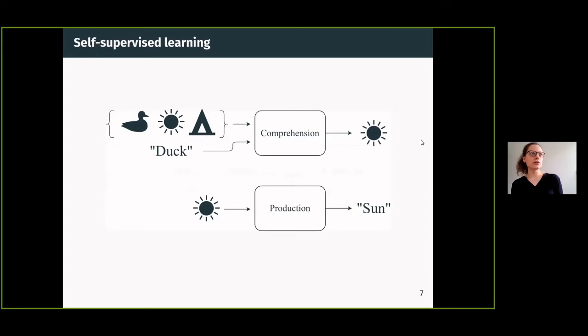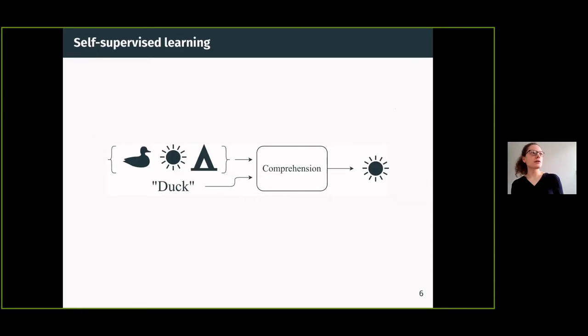Let's see how this self-supervised learning goes. This is a toy example—in reality we use realistic images—but basically we have scenes with a bunch of objects. Let's say there are three objects in the scene: a duck, a sun, and a tent. We hear the word duck.